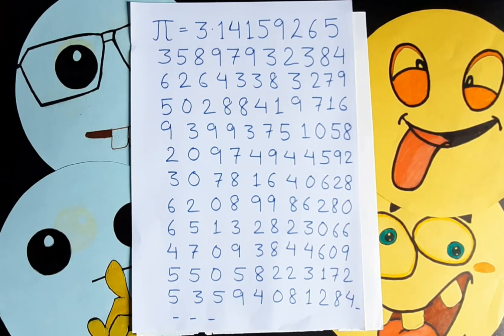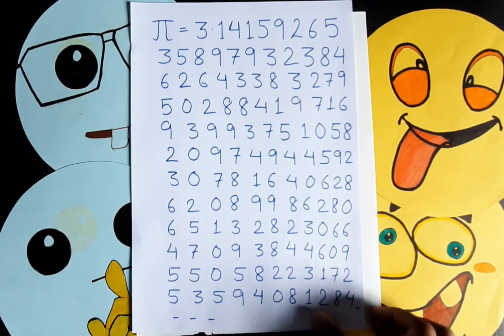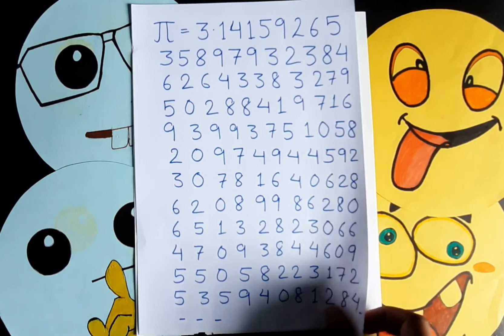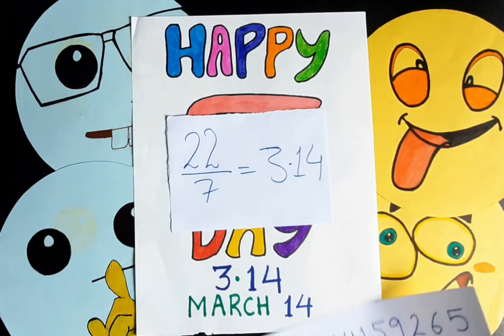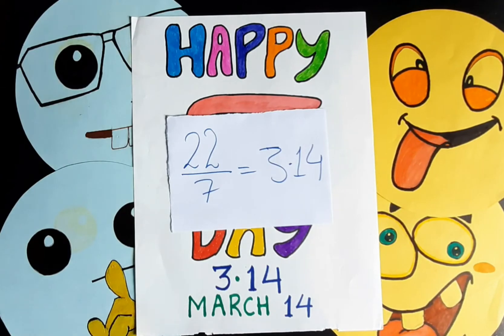Pi is an irrational number, meaning it will never terminate. But we commonly use Pi as 3.14 or 22/7 for practical calculations.